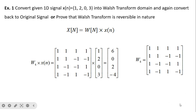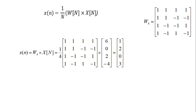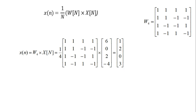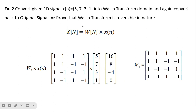Now we convert back to the original signal. The inverse formula is (1/N) · W(n) · X(n). Using (1/4) times the Walsh matrix multiplied by our transform signal [6, 0, 2, -4], when we multiply again we get back the original signal. This proves that the Walsh transform is reversible in nature because there is no information loss when moving from one domain to another domain.